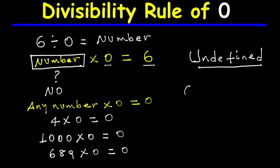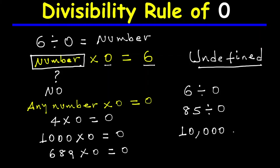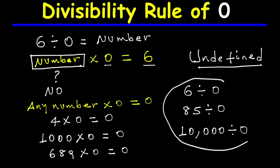Any non-zero number divided by zero is undefined. Six divided by zero is undefined. Eighty-five divided by zero is undefined. Ten thousand divided by zero is undefined. All these divisions are undefined.